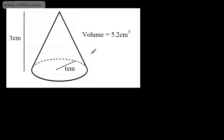Let's look at another example. We've got a perpendicular height of 3 centimeters, a base radius of T centimeters, and a volume of 5.2 centimeters cubed. These examples have been in centimeters, but it could be in any unit — meters, kilometers, inches. All we have to do is work this backwards.